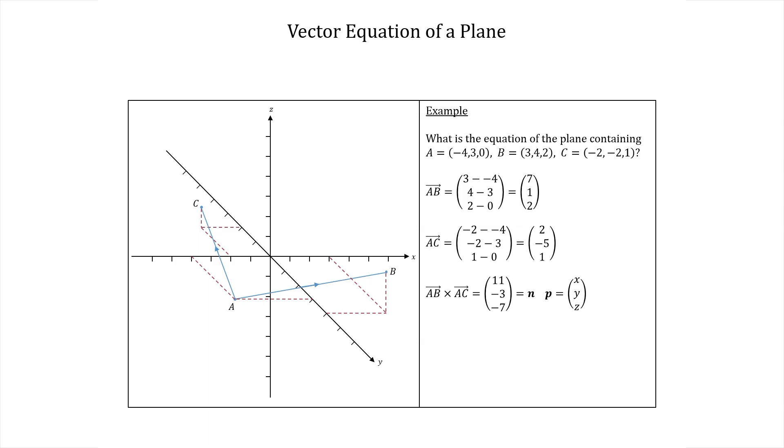The position vector of any point in the plane will do. So let's use the position vector of a which we'll call lowercase a which equals (-4,3,0). So we have all the info we need. Let's put it together.